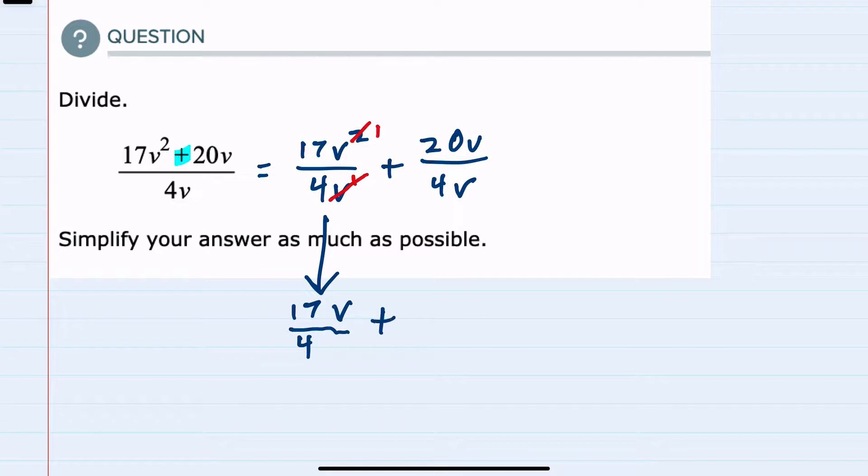Then for the second term we can look at the numbers and see that both 20 and 4 are divisible by 4, so 4 goes into 4 once, 4 goes into 20 five times.